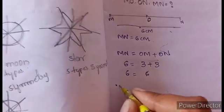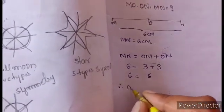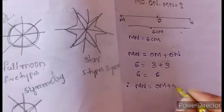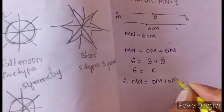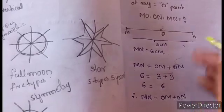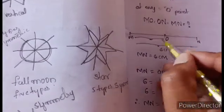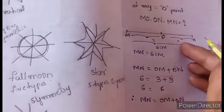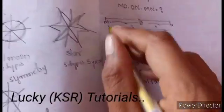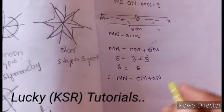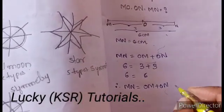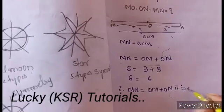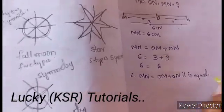MN is equal to 6 centimeters. The total length is 6 centimeters. So it is equal and verified as correct. Next question.